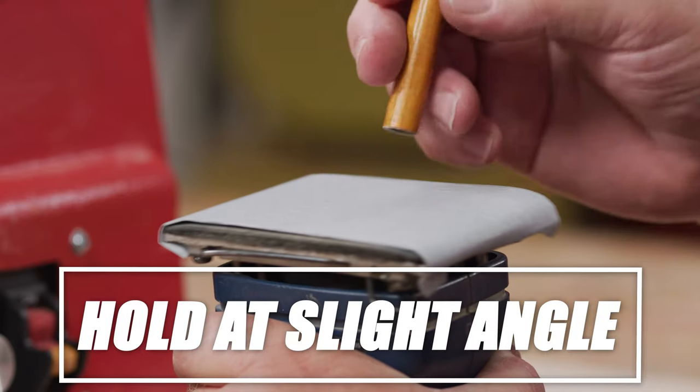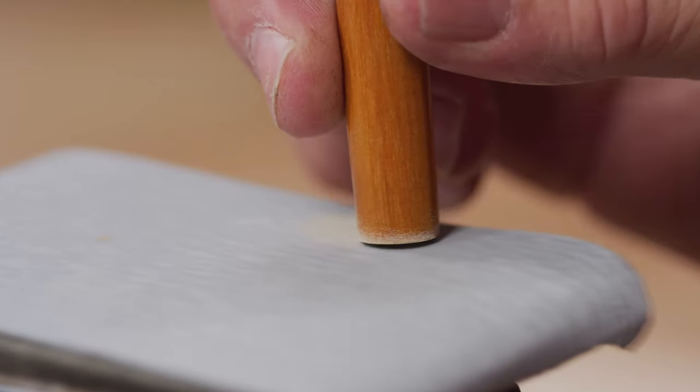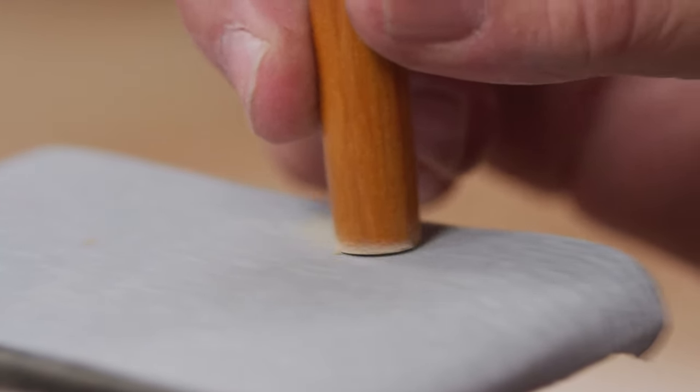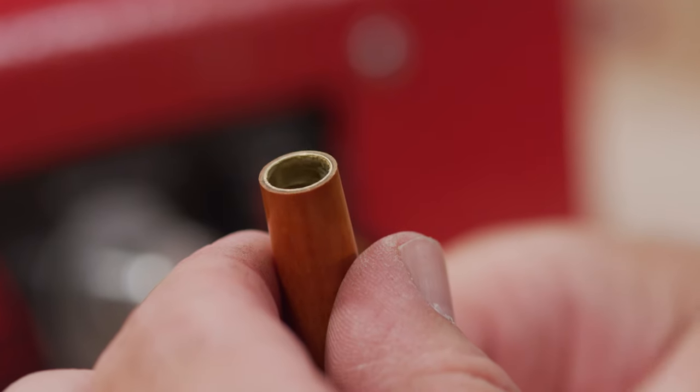To eliminate an overhang, remove the blank from the mandrel and hold it at a slight angle to a piece of 400 or finer grit sandpaper. Twirl the blank and press lightly against the sandpaper. This superfine sanding will create a micro bevel on the end of the barrel and remove the overhang.